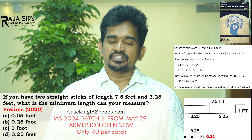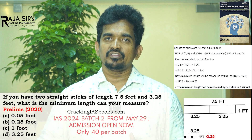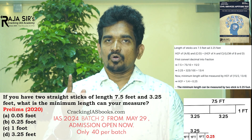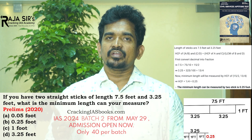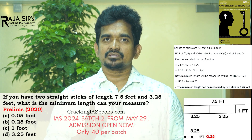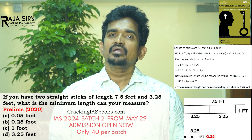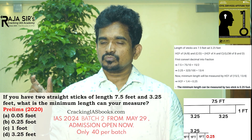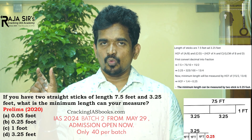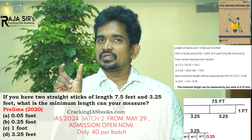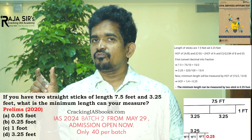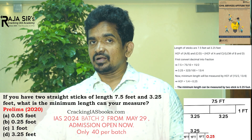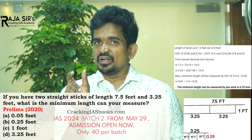You have one stick of 7.5 feet and one stick of 3.25 feet. With the 3.25-feet stick, you can measure twice along the 7.5-feet stick — that covers 6.5 feet. You are left with 1 foot. So now you have a remainder of 1 foot.